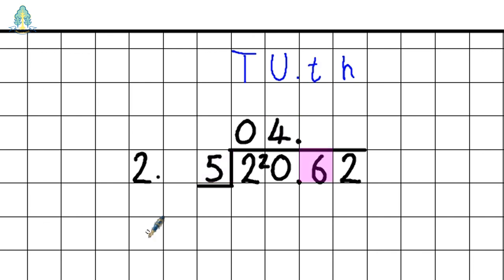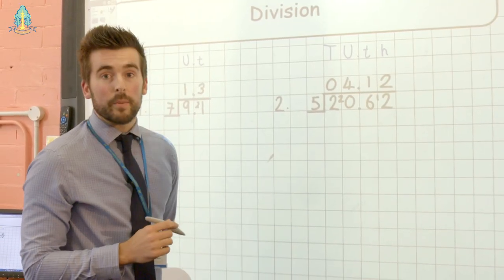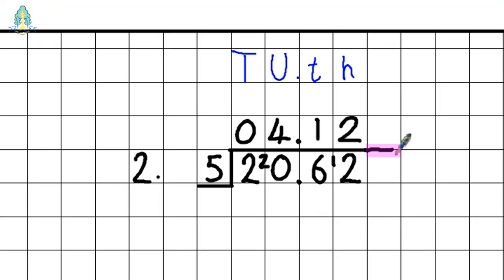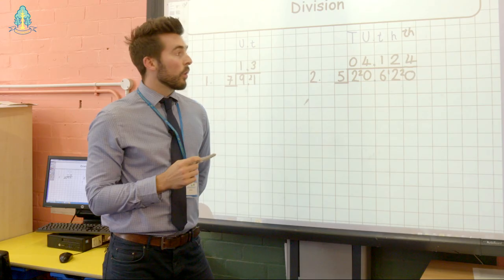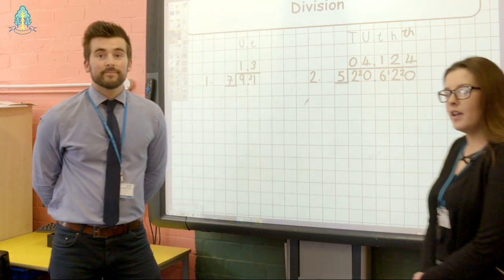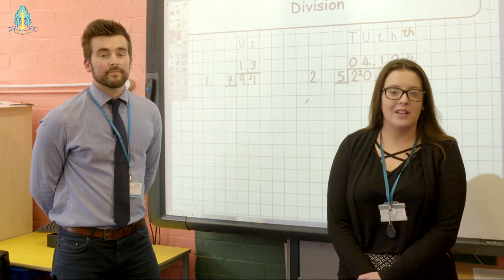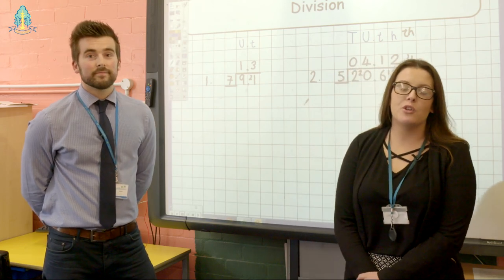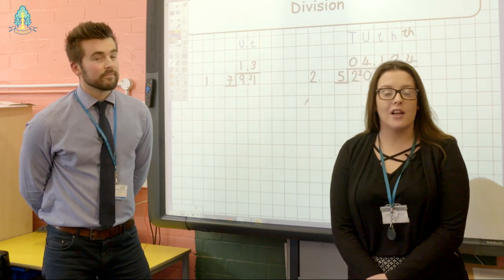Next, the tenths column: six divided by five goes in one time; carry our one, so we've now got twelve hundredths. Twelve divided by five goes two times remainder two. But we have no digits left to carry our remainder into, so we extend our line, add a placeholder zero — which does not change the value of the number — and carry our two thousandths down to create twenty. Twenty divided by five is four, giving us a final answer of four point one two four. You can practise addition, subtraction, multiplication and division calculations with decimal fractions with your child at home. You may also want to make links to real life contexts such as money and budgeting.